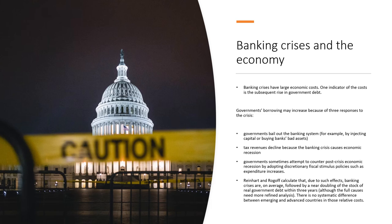Reinhart and Rogoff calculate that due to any combination of these steps that governments take during banking crises, there is a near doubling of the stock of government debt. This is why governments try so hard to prevent banking crises — they have literally been known to double the amount of debt they carry. And there's no real systematic difference between emerging and advanced countries in those costs; banking crises are just as bad for advanced countries as for emerging markets.